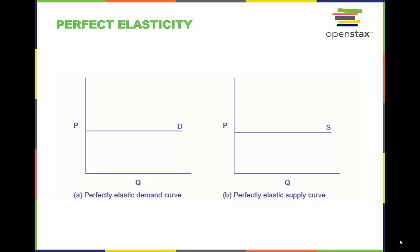The quantity supplied or demanded is extremely responsive to price changes, moving from zero for prices close to P to infinite when prices reach P.